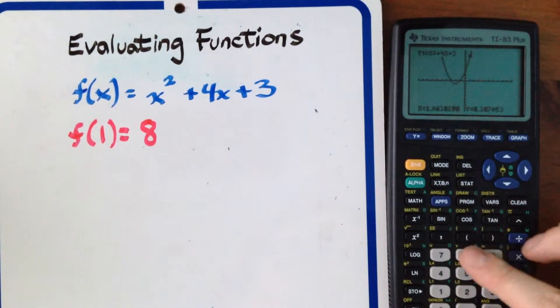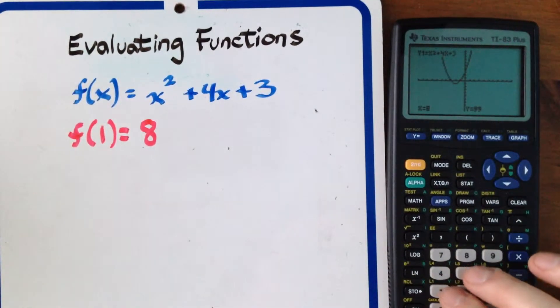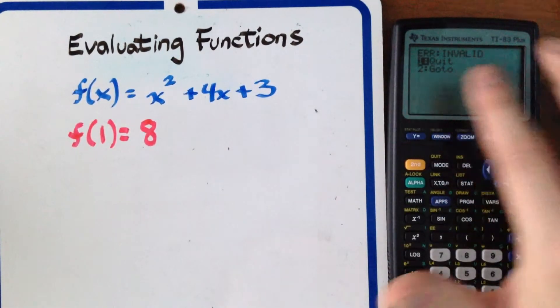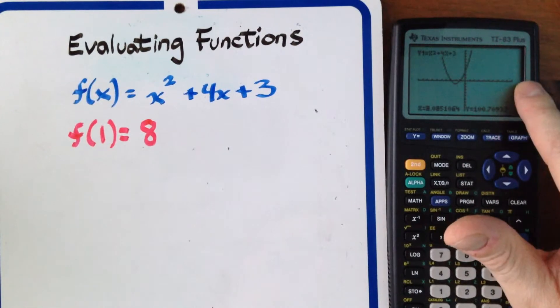So say I wanted to do 8 it would spit out what 8 is. Now if you notice if you put a value in like say 15 and you hit enter it's going to say invalid. The reason why is because 15 is off of the graphing screen because it only goes up to about 10.